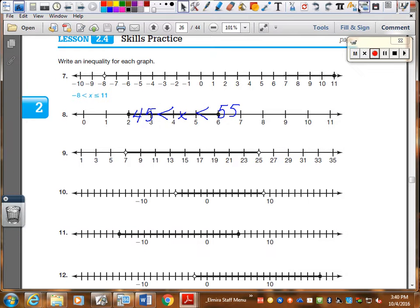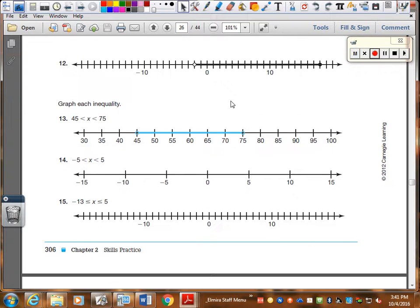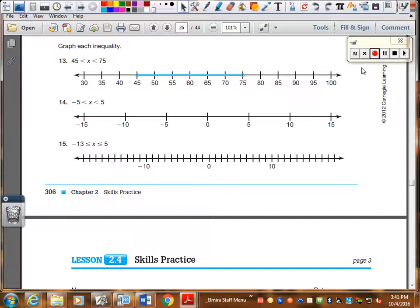In the next section, it says write an inequality for each graph. These are all compact inequalities. They're all ands. So, smaller number, variable. Larger number, less than, less than. Now, looking at our dots. That's colored in. I get an equal bar. Six is colored in. I get an equal bar. We still have not going to hit any ors yet. We're still ands.